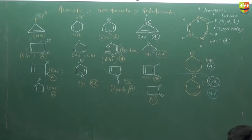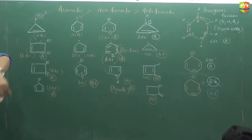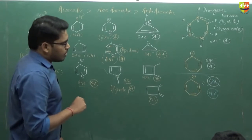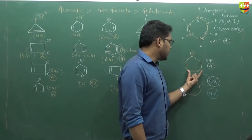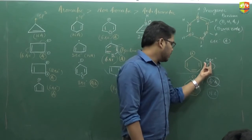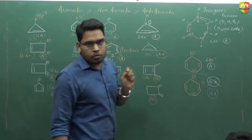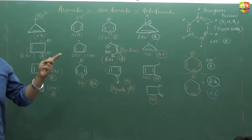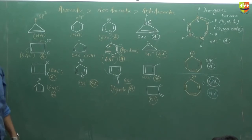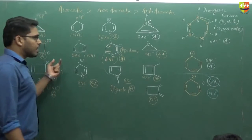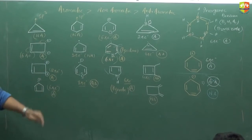7 atoms in the ring — cyclic only we are considering, not total. Side chain we won't consider. So overall: if 7 atoms are present, aromatic is possible, anti-aromatic is not possible. So only two answers are possible: aromatic or non-aromatic. If it has 4n+2 pi electrons — aromatic, otherwise it will be non-aromatic.